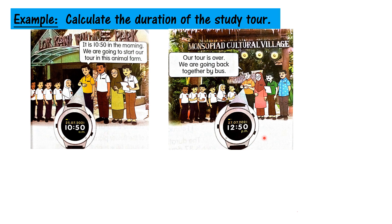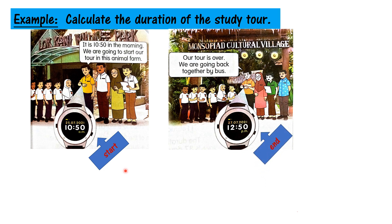Now, first you must identify the start time and end time. Look at these 2 watches. Which is the start time? Masa mulanya yang mana satu? This is the start time, and this is the end time. When we want to calculate the duration, we use a number line. Kita akan guna number line. First, you draw a line. Lukiskan satu garisan.